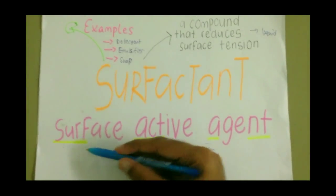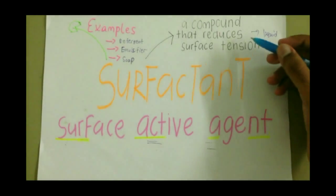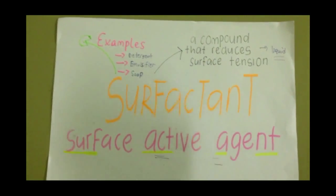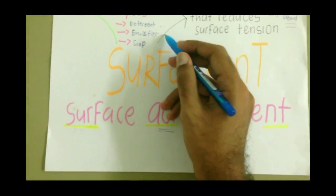So what is surfactant? Surfactant is surface active agent. The function of a surfactant is to reduce the surface tension of a liquid. There are common examples of surfactants such as detergent, emulsifier and soap.